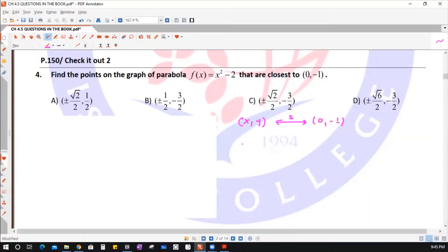We must write the distance as a function in one variable. So I am writing (x - 0)² + (y - (-1))², which is (y + 1)². This is the distance formula and here it has two variables: x² + (y + 1)². Again, the given function is y = x² - 2.